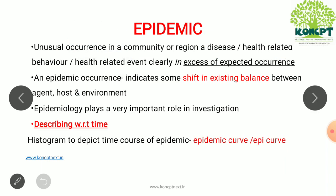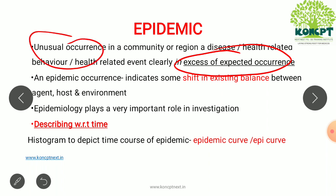First, what is an epidemic? It is the unusual occurrence in a community or region of cases in excess of expected occurrence. This is very important. Epidemic mostly occurs because there is a shift in the existing balance between agent, host, and environment. Epidemiological studies play a very important role in the investigation of an epidemic.